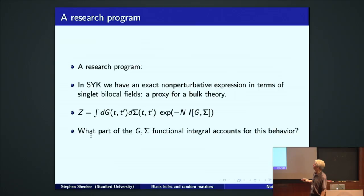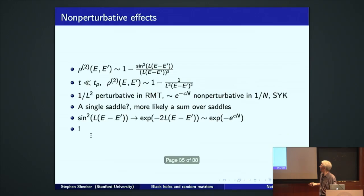Well, we don't know, but here's a research program. In this SYK simple model, we have an exact non-perturbative rewrite of the model. It's this integral over two bi-local fields with a known action. This has to describe the ramp and the plateau because it's just a rewrite. What part of this G-sigma functional integral accounts for this behavior? If we knew that, we might be able to generalize to systems like Super Yang-Mills and Einstein gravity and its completion. Well, toward this research program, we don't know the answer, but let me make some general comments.